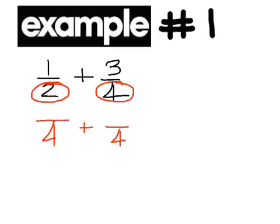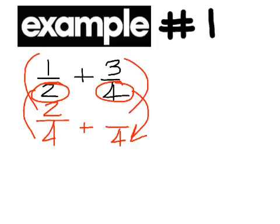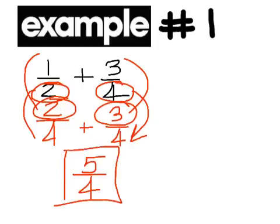Now, what do I have to multiply two by to get four? Two. So you multiply one by two to get two. And what did I have to multiply four by to get four? One. So three times one is three. Now that you have the same denominator you can add the fractions together. Two plus three is five. and then put it over four. No need to make it a mixed number. Leave it as an improper fraction.